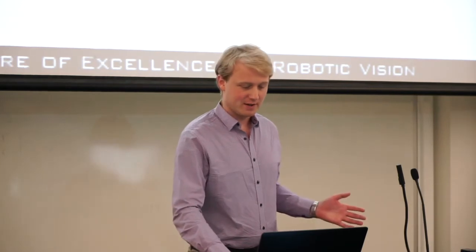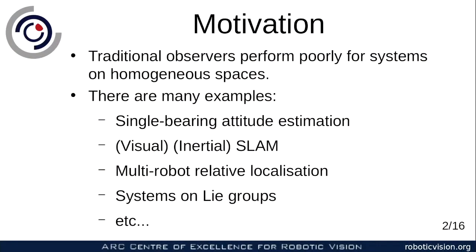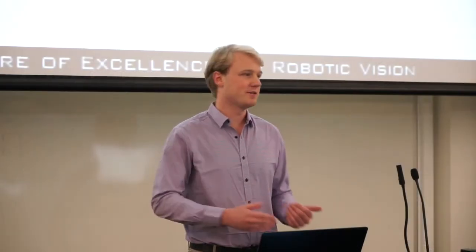First, I want to give a little bit of motivation. Traditional observer designs, particularly things like the extended Kalman filter, tend not to work very well for nonlinear systems on homogeneous spaces. There are a lot of systems on homogeneous spaces that we care about designing observers for. Single bearing attitude estimation is a really easy example — your system state lies on the two-sphere, which is a homogeneous space with respect to SO(3), the 3D rotations. But we found lots of other examples: visual and inertial SLAM, multi-robot relative localization, and of course any system on a Lie group is a homogeneous space with respect to that Lie group.